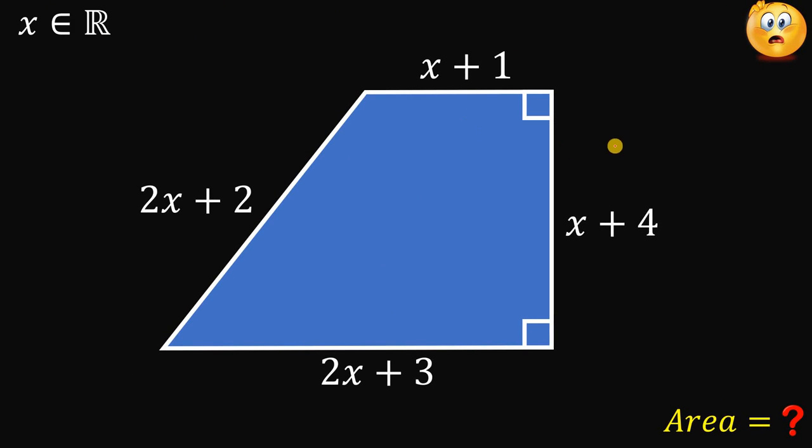Alright, so this is a tricky question from one of our followers. This is very tricky because we want the numerical value of the area of this trapezoid. And how do we get the numerical value when we are given the side length is a polynomial?